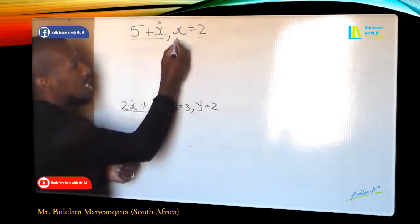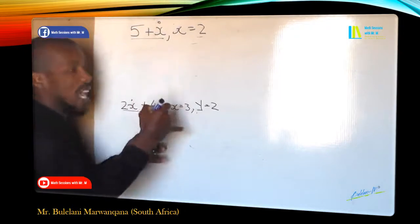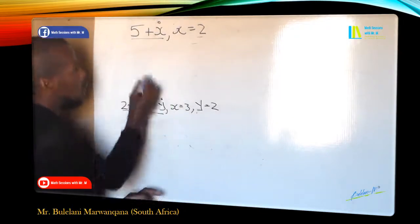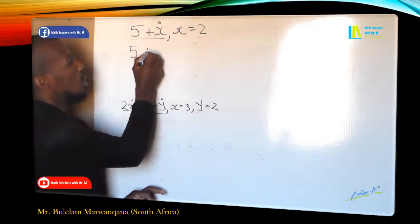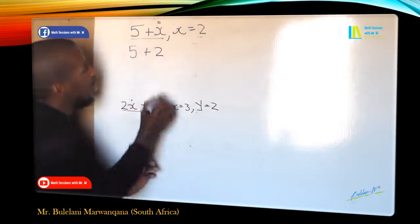So we are going to evaluate one variable first, which is given to us that X is equal to 2. Wherever you see X, we input in a 2. So on this expression which is 5 plus X is going to be 5 plus 2.